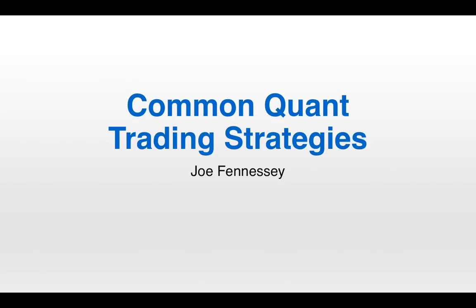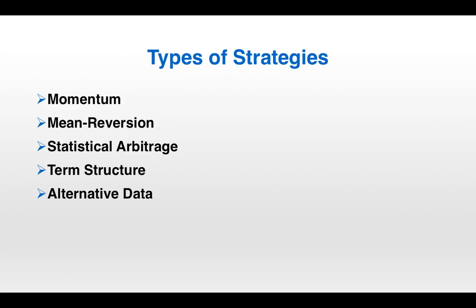Hey, it's Joe, and this is the third installment in the Quant Trading in Futures video series. Today we'll discuss common quant trading strategies. I've grouped the strategies into five categories: momentum, mean reversion, statistical arbitrage, term structure, and alternative data. We're going to go through many different examples today. I want to make it clear from the onset that I'm not endorsing any of these strategies, just trying to give relatively simple examples of strategies that are representative of the category as a whole.